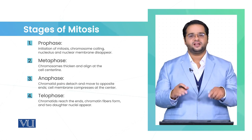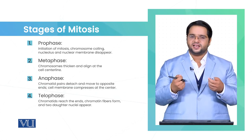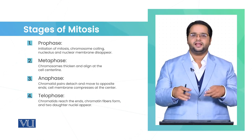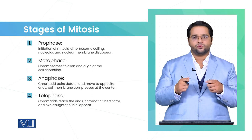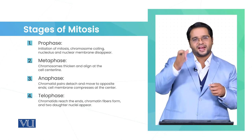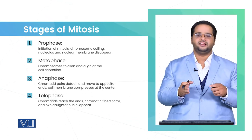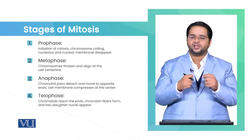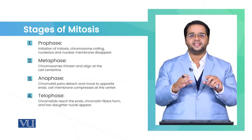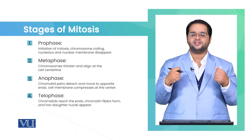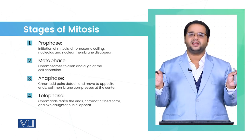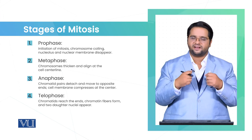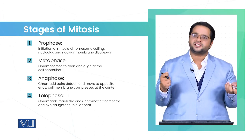In prophase, chromosomes condense while the nuclear membrane disappears. In metaphase, these condensed chromosomes are aligned in the center of the cell. In anaphase, the chromosomes are pulled to the opposite poles through centrioles that are already assembled at the opposite poles, which through spindle fibers attract the chromosomes to those poles.